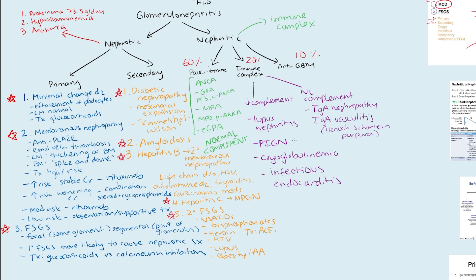Going back to post-infectious glomerulonephritis and IgA nephropathy: IgA nephropathy is really going to be happening about three days after an upper respiratory tract infection, whereas post-infectious glomerulonephritis is going to be about 14 days on average after an upper respiratory tract infection. A way to remember this: IgA has three letters in it, so that reminds you it's three days after a URI. Post-infectious has about 14 letters in it, so that's why it happens 14 days afterwards.